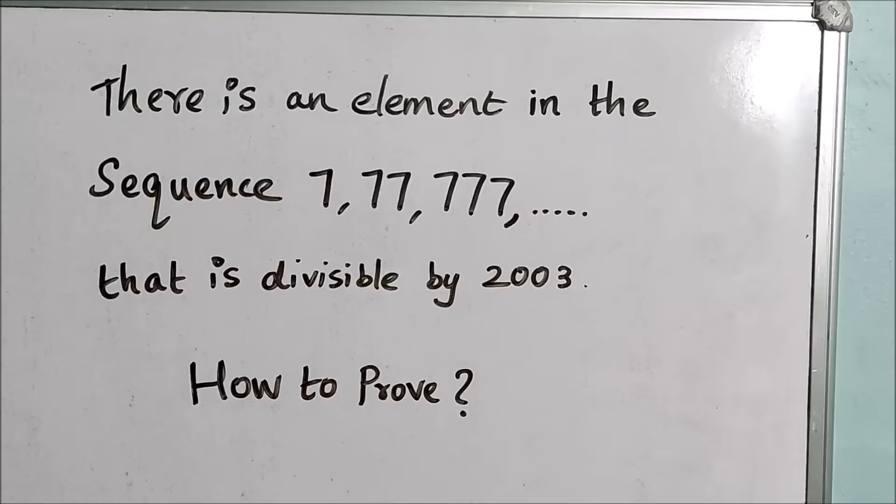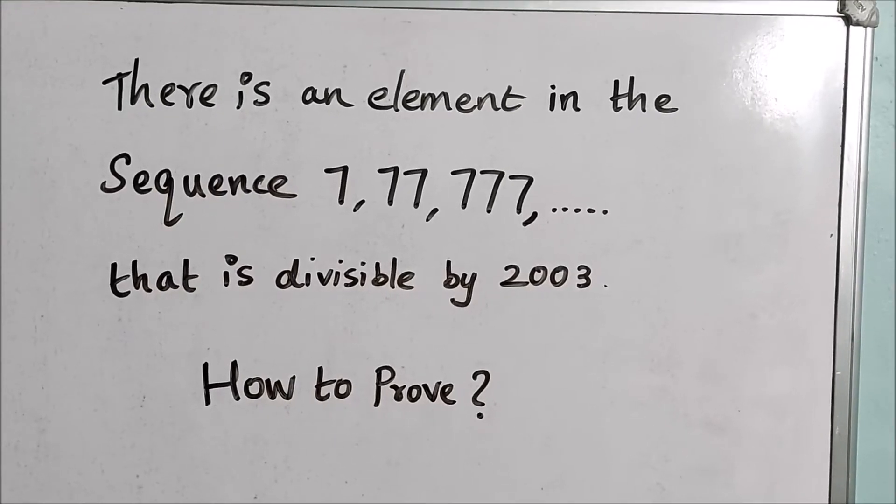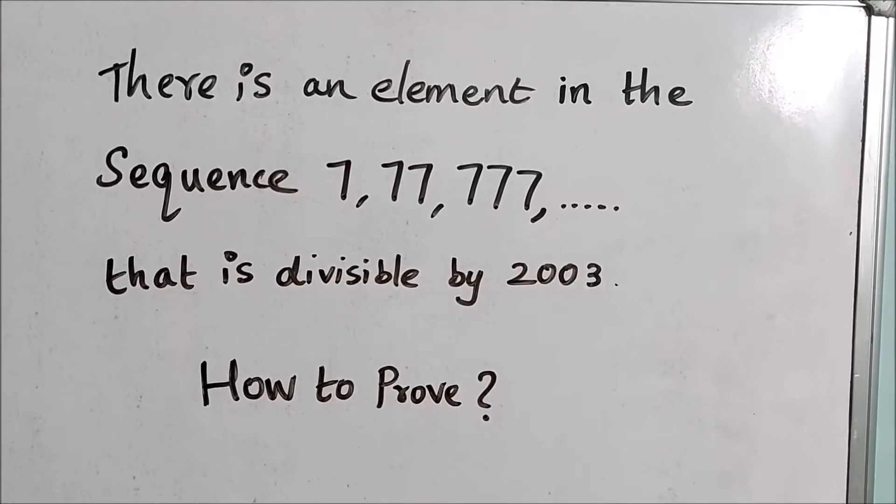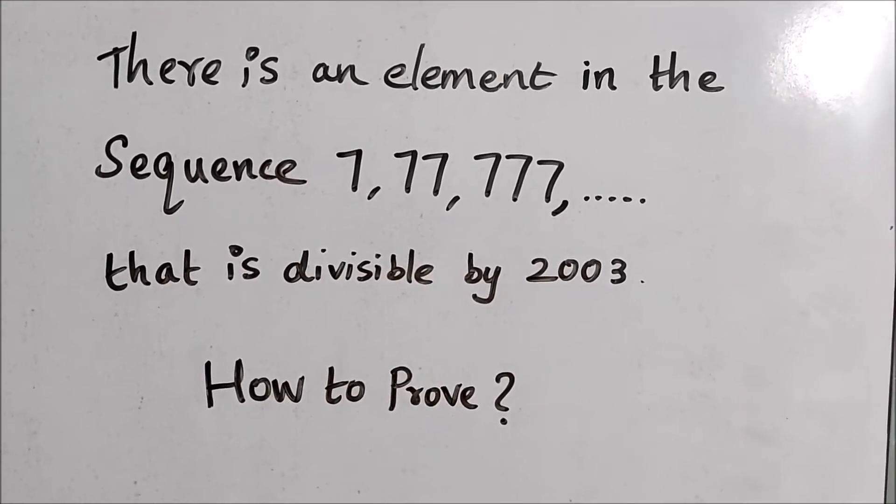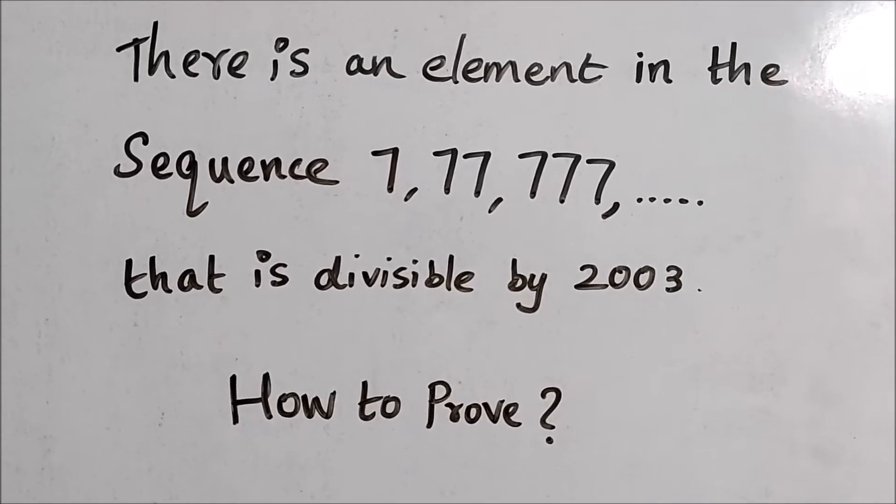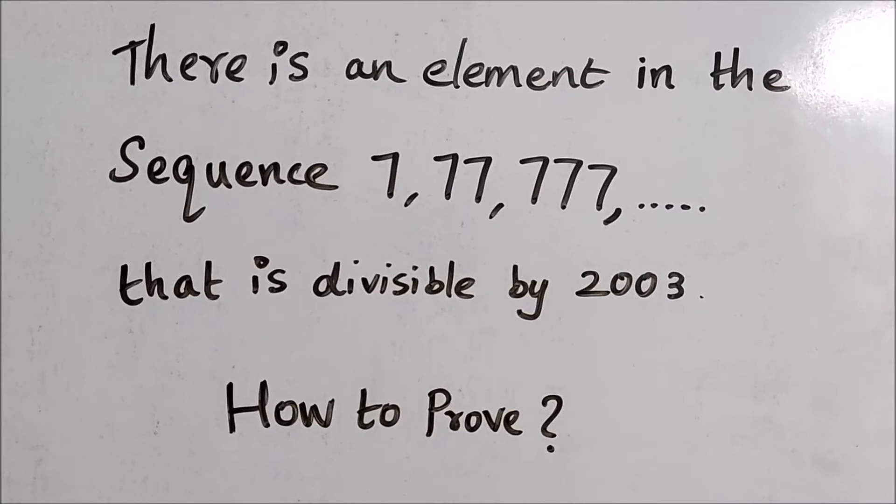Hello friends and welcome to a new video. Look at the statement: there is an element in the sequence 7, 77, 777, and so on that is divisible by 2003. How to prove this statement? That's what we are going to see in this video.